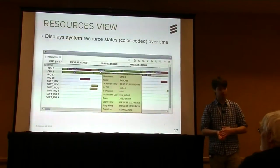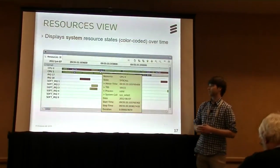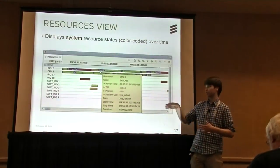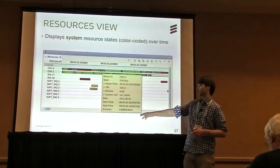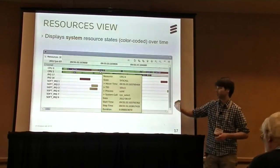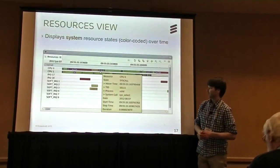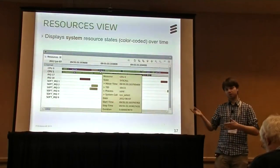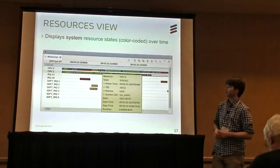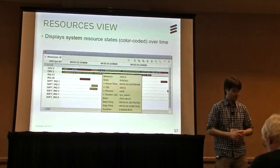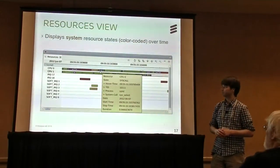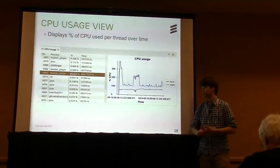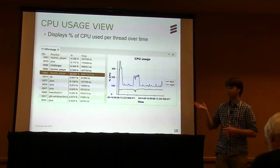Another similar-looking view is the resources view. This one has the hardware point of view — you see your CPUs, IRQs, and their states over time. For example, you can see that CPU 0 is busy in a system call. If you're doing embedded development, this is a view you'd look at more. It shares the same functionality as the control flow view.